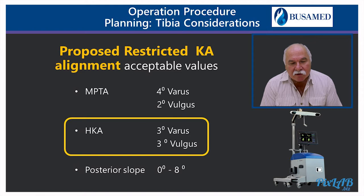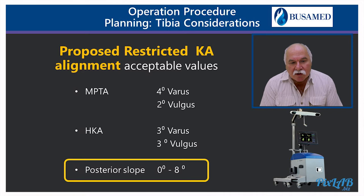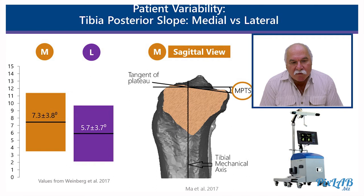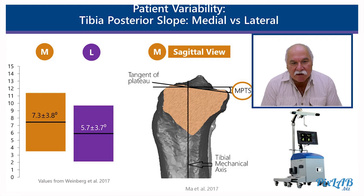If we look at Stephen Howe, his MPTA variation and survival of 200 cases were between 8 degrees of varus and 6 degrees of valgus. The restricted kinematic alignment is acceptable. If we look at hip-knee-ankle coronal alignment, we are happy to vary between 3 degrees varus and 3 degrees valgus. As far as posterior slope is concerned, I am happy to accept 0 to 8 degrees. The normal posterior slope values from Weinberg in normal patients are 7.3 plus or minus 3.8 degrees, making it roughly 2 to 11 degrees.